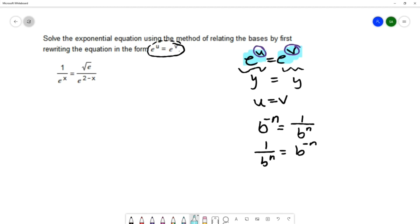So that's what we're going to do with the left hand side of this equation. So for 1 over e^x we'll write that as e^(-x) using the properties of negative exponents.